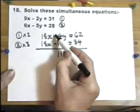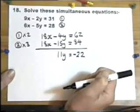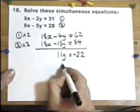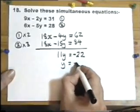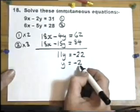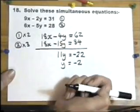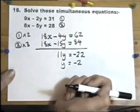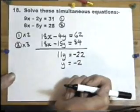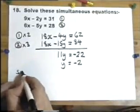If 11y equals minus 22, then y itself is minus 2. Once you've found out one of the letters, you need to work out the corresponding other letter. Shouldn't matter which equation you use, but tell the examiner what you're doing. I'm going to substitute into equation 1.